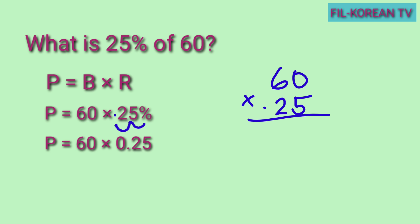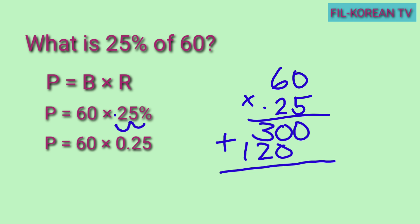Isa-isahin natin. 0 times 5 equals 0. 6 times 5 equals 30. I-multiply din natin yung 0 times 2 equals 0. 6 times 2 equals 12. Sunod, i-plus natin from right to left. Bring down 0. 0 plus 0 equals 0. 3 plus 2 equals 5. Bring down 1. Lalagyan natin ang decimal point — mayroon tayong dalawang decimal places sa ating multiplier, kaya magbibilang din tayo ng two decimal places from right to left: 1, 2. Dito natin ilalagay ang decimal point. Kaya ang answer ay 15.